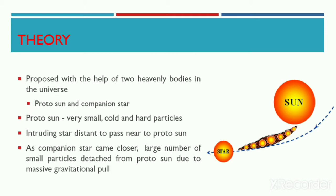Chamberlain and Moulton proposed the planetesimal hypothesis with the help of two heavenly bodies in the universe: one is a protosun and the other is a companion star, which we also call an intruding star. The behavior and character of the protosun was entirely different from the other stars in the universe. The protosun was made of very small, cold, and solid particles and was not circular in shape, like what Laplace postulated in his nebular hypothesis.